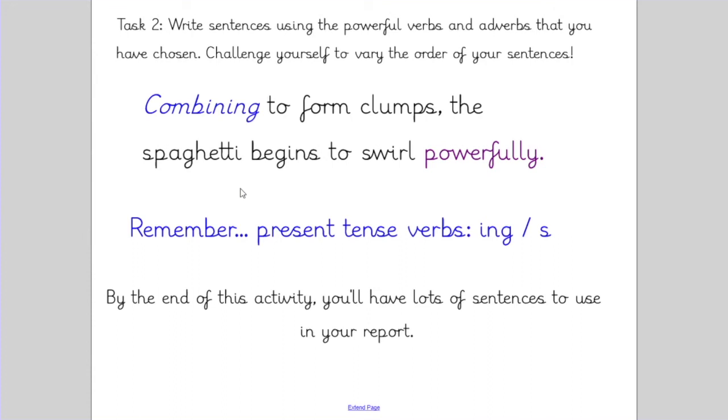'Combining to form clumps, the spaghetti begins to swirl powerfully.' This form of a verb with -ing on the end is called the present progressive tense and it tells us what's happening right now. For this sentence, I've chosen to put that verb first because I want the reader to know that the spaghetti is combining and as it does so, it's beginning to swirl powerfully. Those two things are happening right now. You might choose to put an -ing verb at the start of your sentence to do exactly that - to emphasize the action.